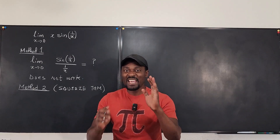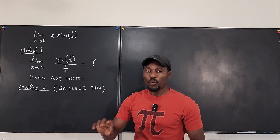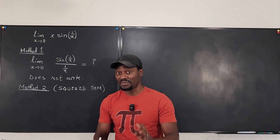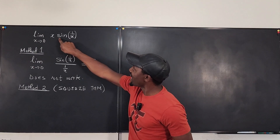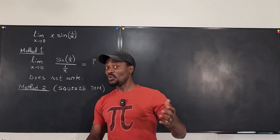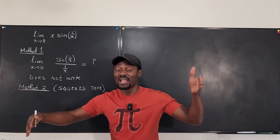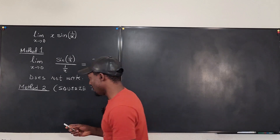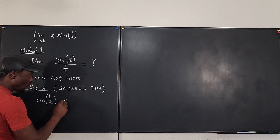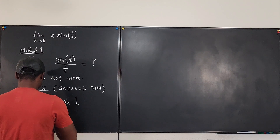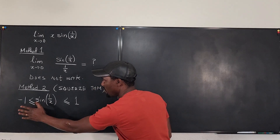The squeeze theorem says: take a part of the function that is bounded. This function has two parts — it's a product of x and sine of 1 over x. Which one is bounded? I know x can be anything, but no matter what x is, sine of 1 over x can only be as low as negative one and as high as one. So it is bounded between negative one and one.